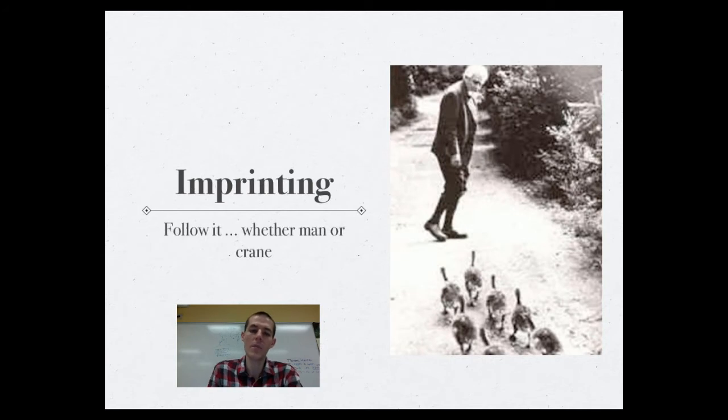First up, we've got imprinting. And this is a very famous experiment. Early behavior scientists realized that certain organisms will follow or imprint to whatever the first thing they see when they are born is. In birds, imprinting is especially important. When a bird is hatched, it will imprint on whatever the first thing it sees moves.